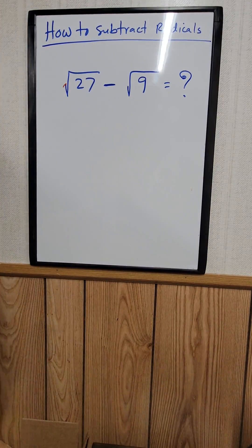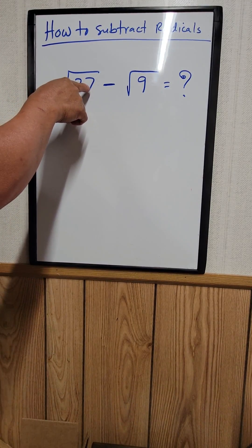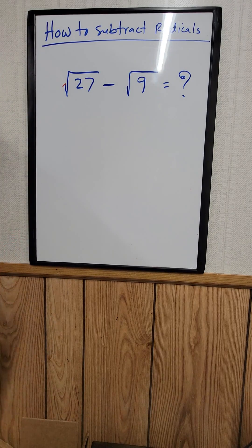How to subtract radicals? For example, right here, the square root of 27 minus the square root of 9.